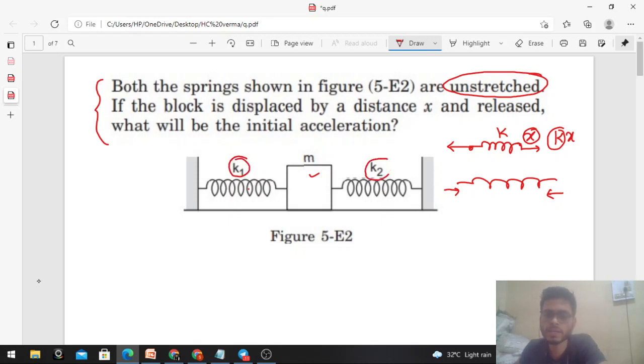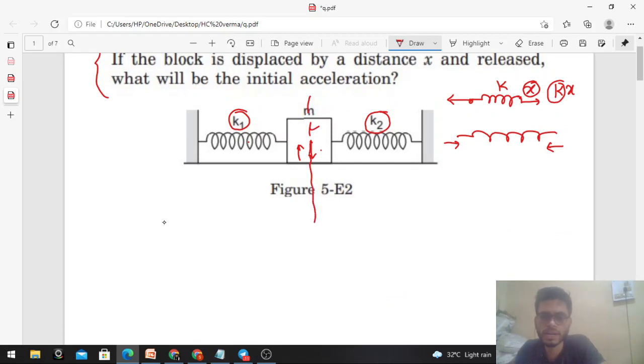Here we will draw the free body diagram. If the block is displaced rightward by distance X, then the spring on the right-hand side of the block will be compressed by the same distance X.